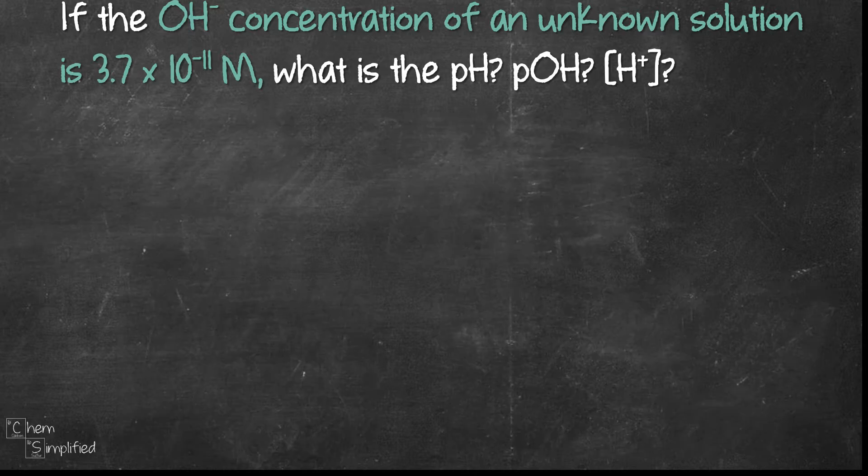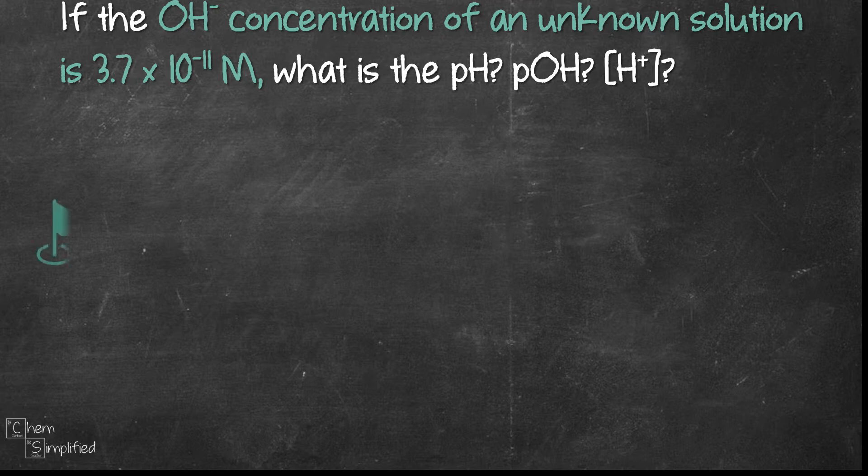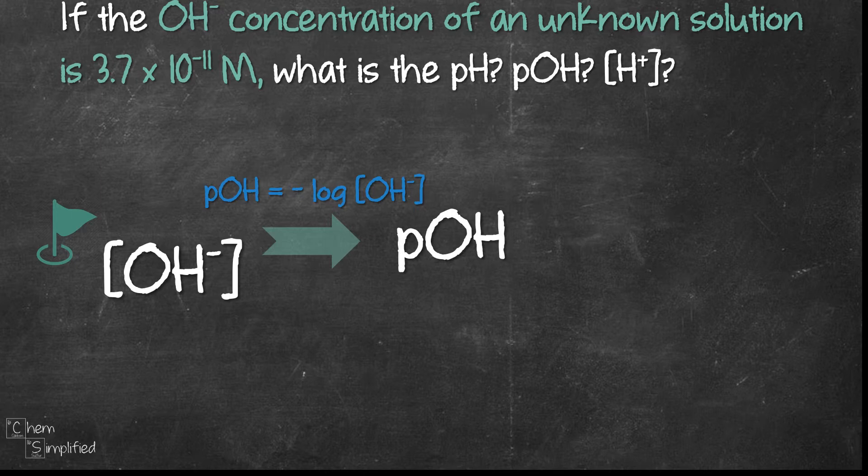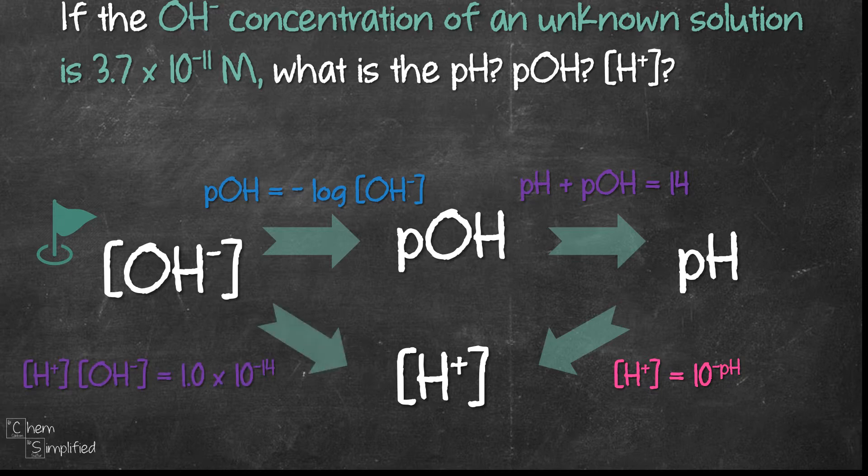To recap, here's the strategy that we use to calculate the values for pH, pOH, and H+ given OH- concentration. So we started with the OH- concentration and then we found the value of pOH and from there pOH we look for pH and then what we did was we use pH to find H+. Now that's one way of finding H+. Another way is that we go directly from OH- concentration and we find H+ concentration directly.